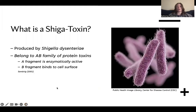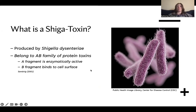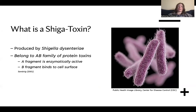So first and foremost, what is a shiga toxin? As we discussed, it is produced and originally came from the bacteria Shigella dysenteriae, which I have pictured here on the right. This toxin belongs to the AB family of protein toxins. The AB refers to the fact that it is comprised of two distinct parts: an A fragment that is enzymatically active, and a B fragment which works to bind to the host cell surface.